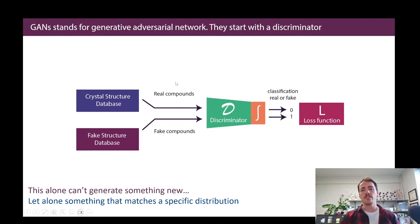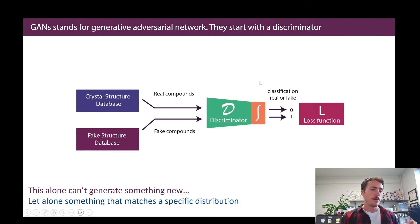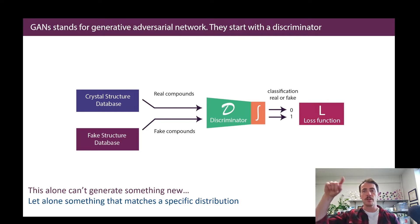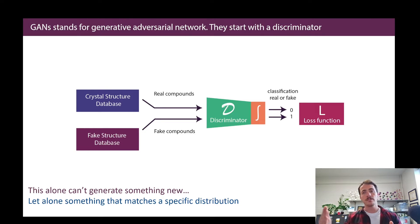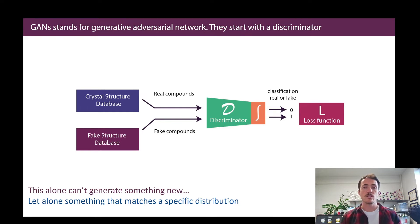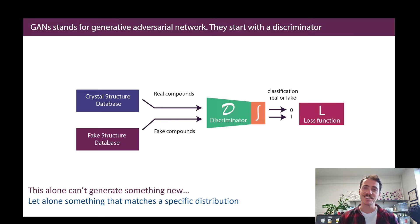The typical thing you'll see at the end of the discriminator is something like a sigmoid function. Sigmoids have this great shape — if the final node of your neural network is a negative number, it flattens to zero, and if it's a really positive number, it goes to one. There's only a little region in the middle where there's ambiguity, which makes them a good classifier and a good discriminator.